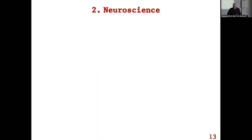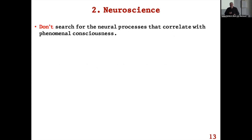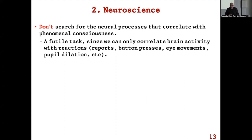Neuroscience: don't search for the neural processes that correlate with phenomenal consciousness — there isn't such a thing as phenomenal consciousness. And anyway, searching for correlations isn't really what scientists should be doing; they should be searching for explanations and mechanisms. Correlations are cheap — all sorts of things correlate with other things. It's a futile task because we can only correlate brain activity with reactions: reports, button presses, eye movements, pupil dilations.